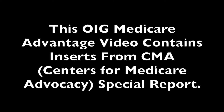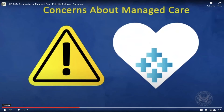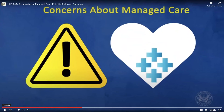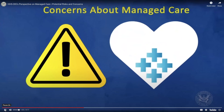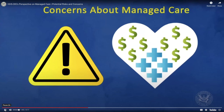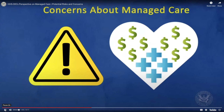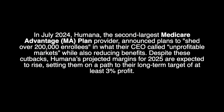I'm going to play the video from the OIG website, and you will see inserts from the Centers for Medicare Advocacy. One concern is that when plans agree to cover the cost of your care for a fixed monthly payment, some plans might improperly limit your access to care to maximize their profits. If you get less health care services, the plan gets to keep a larger share of the fixed monthly payment.